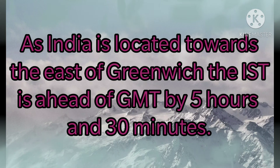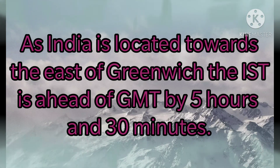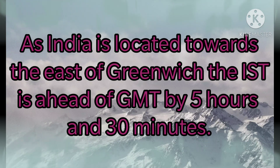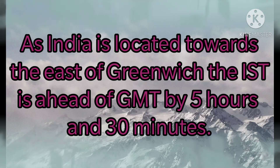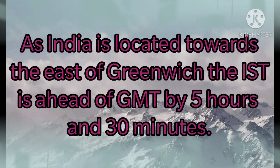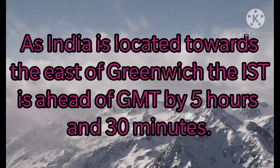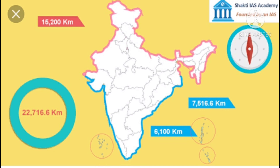The standard meridian of India provides for an exact difference of 5 hours and 30 minutes between the Greenwich Mean Time and the Indian Standard Time. As India is located towards the east of Greenwich, the IST is ahead of GMT by 5 hours and 30 minutes.